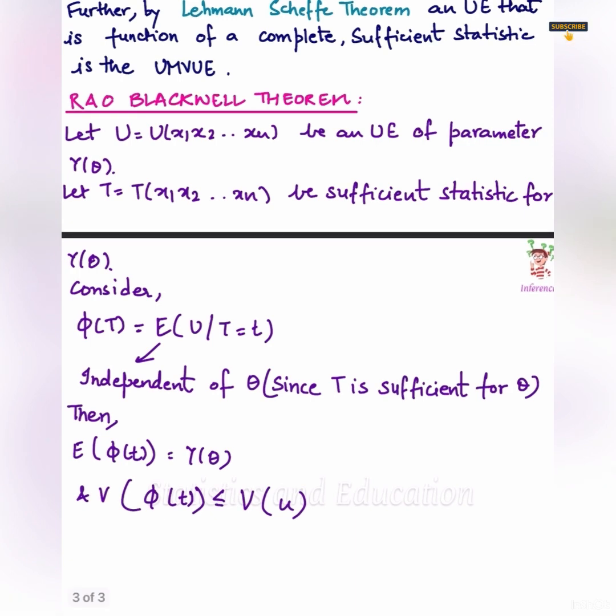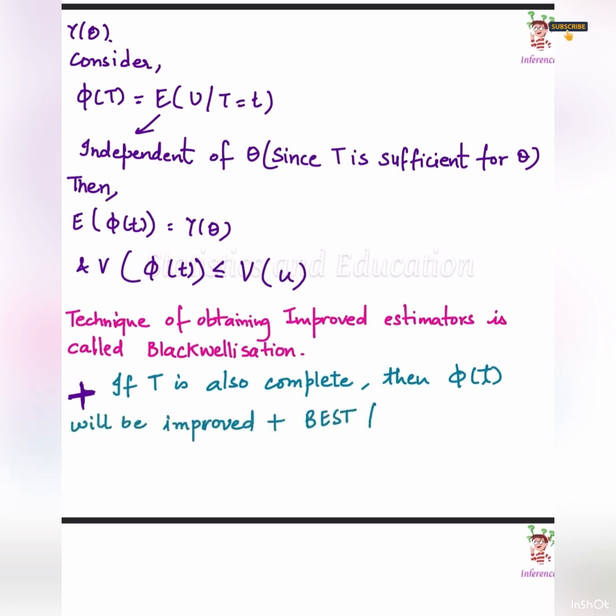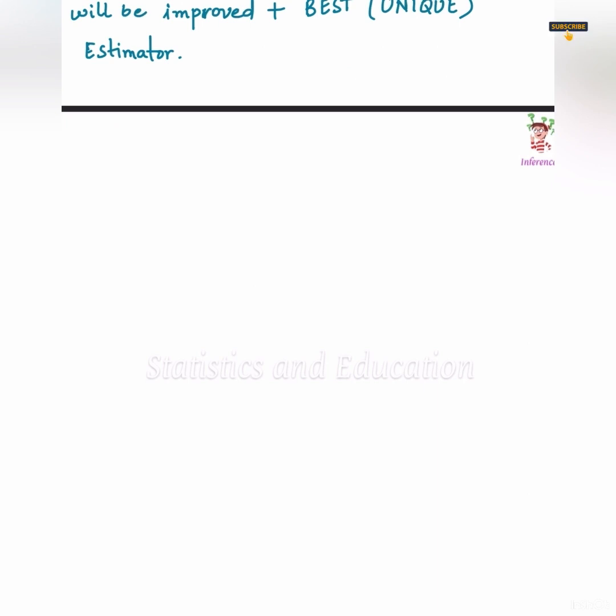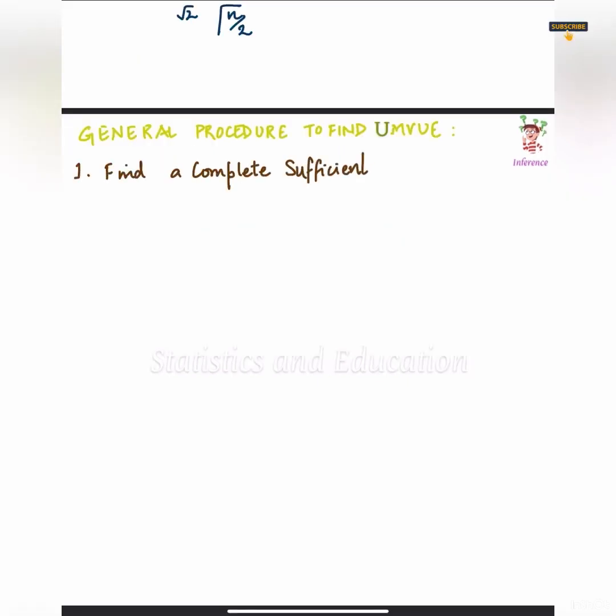We already know Rao-Blackwell theorem. We already know the significance of having a complete and sufficient statistic. And we know the general procedure to find UMVUE when we have a complete and sufficient statistic according to Rao-Blackwell theorem. Now, we will do a few more questions.